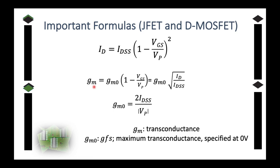And then you have GM or the transconductance. Conductance is 1 over resistance. GM is equal to GM0 times quantity 1 minus VGS over VP. This term can be replaced to get GM equals GM0 square root of ID over IDSS. GM0, when not given, is equal to 2 IDSS over the absolute value of VP.